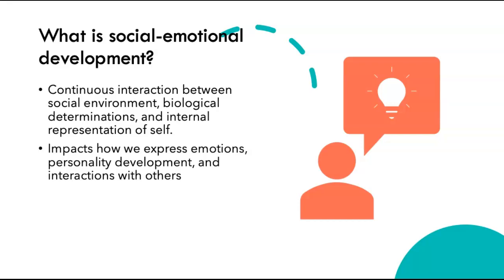This allows us to express emotions, it influences personality development, and interactions with others. So social-emotional development is this continuous interaction between these different components of the self and the environment, which then has a direct influence on how we express emotions, how we develop our personality, and how we interact with others.